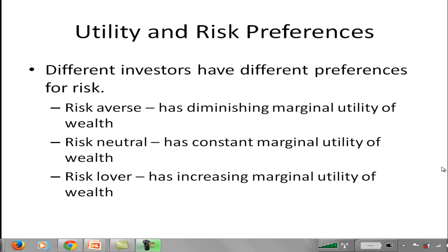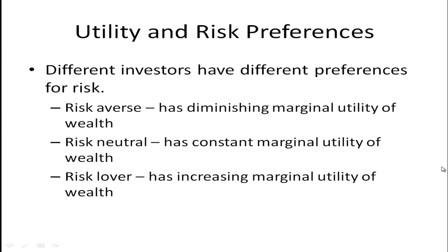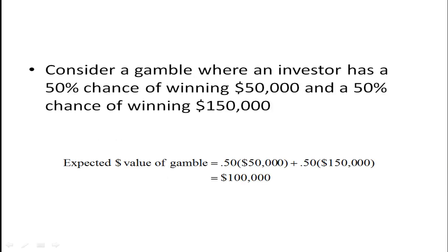Let's take a look at an example that might be easier to understand. Consider a gamble where an investor has a 50% chance of winning $50,000 and a 50% chance of winning $150,000. The expected dollar value of this gamble is 50% times $50,000 plus 50% times $150,000, so the expected dollar value of the gamble is $100,000.